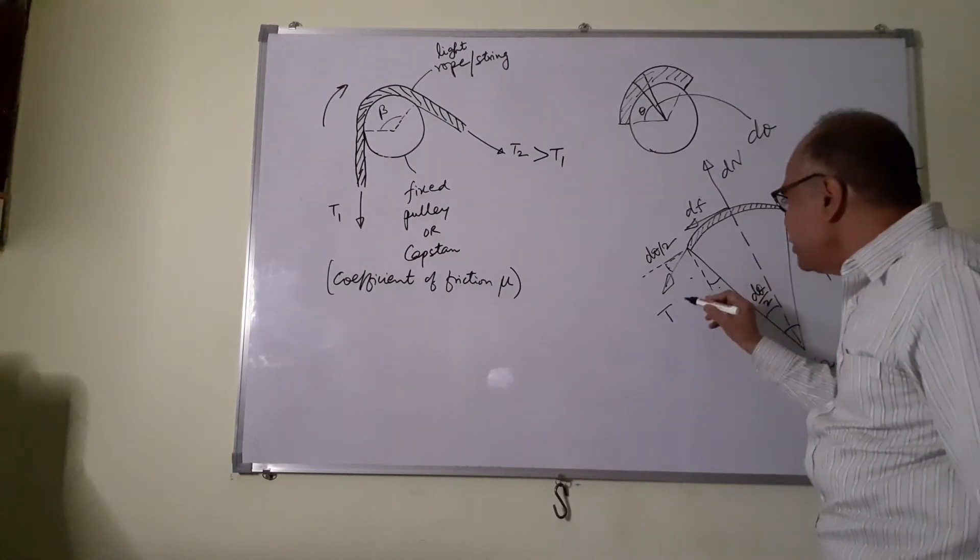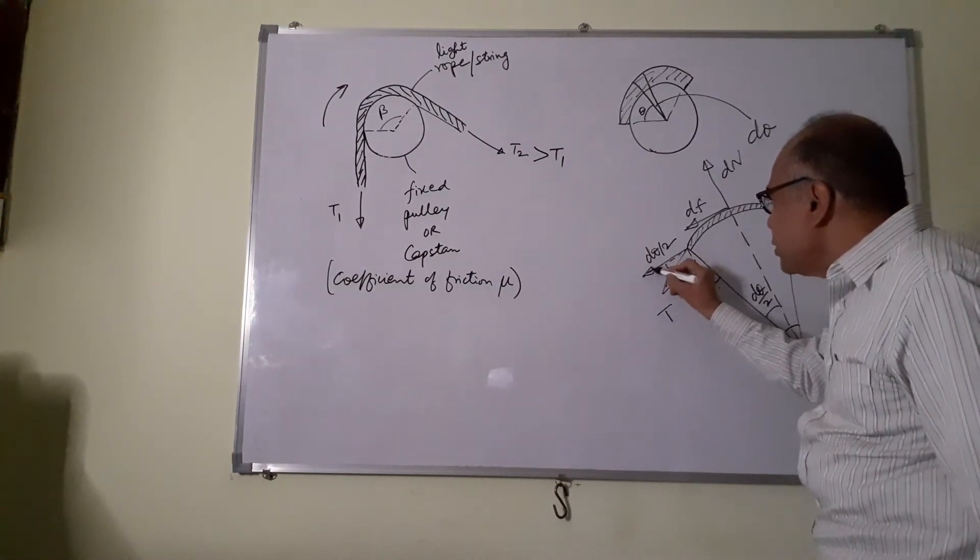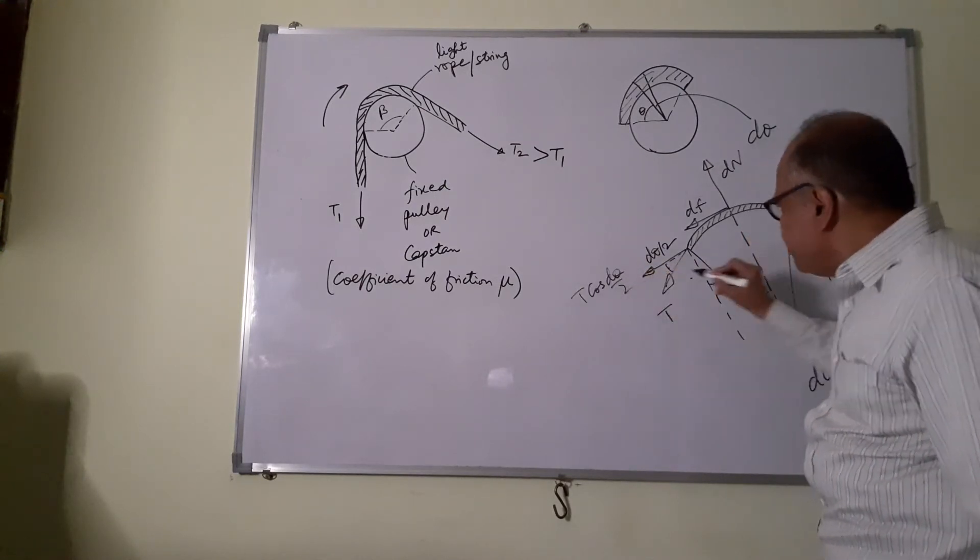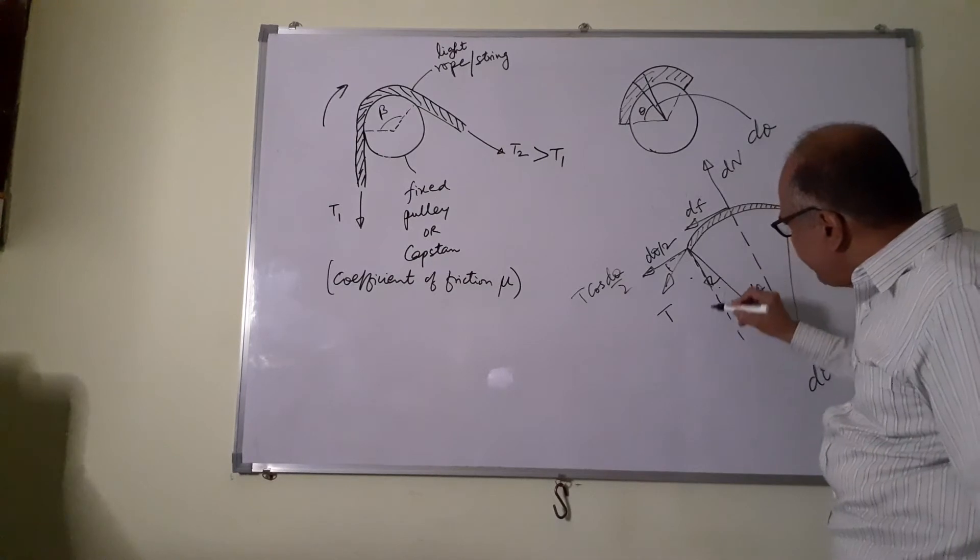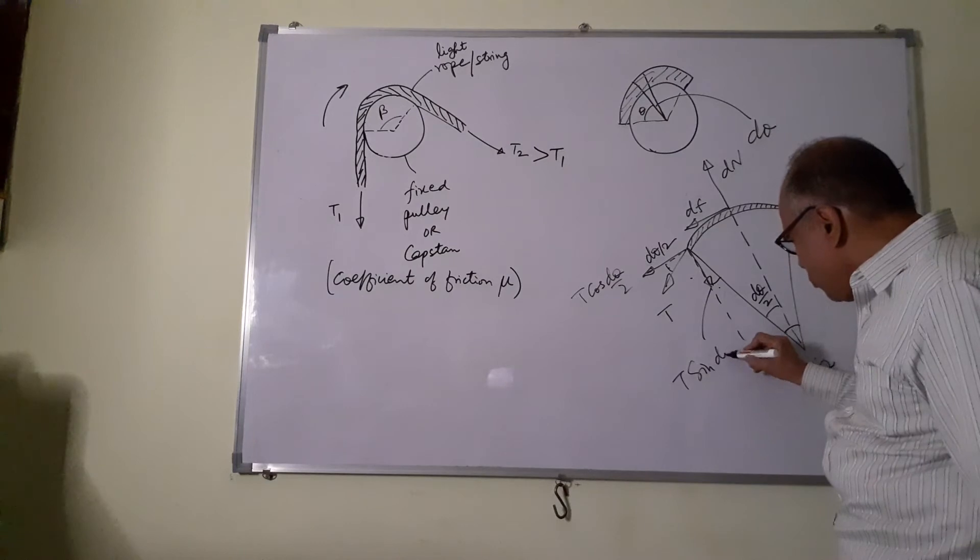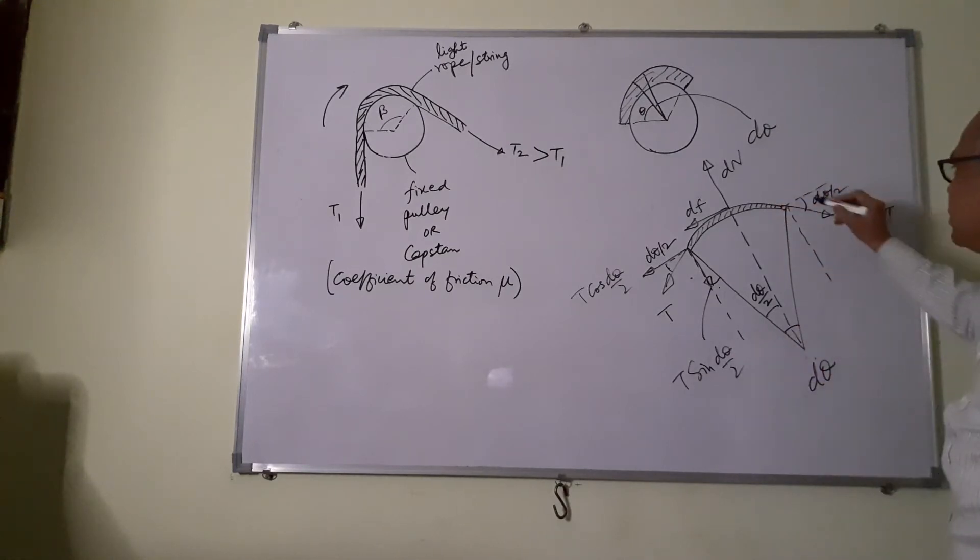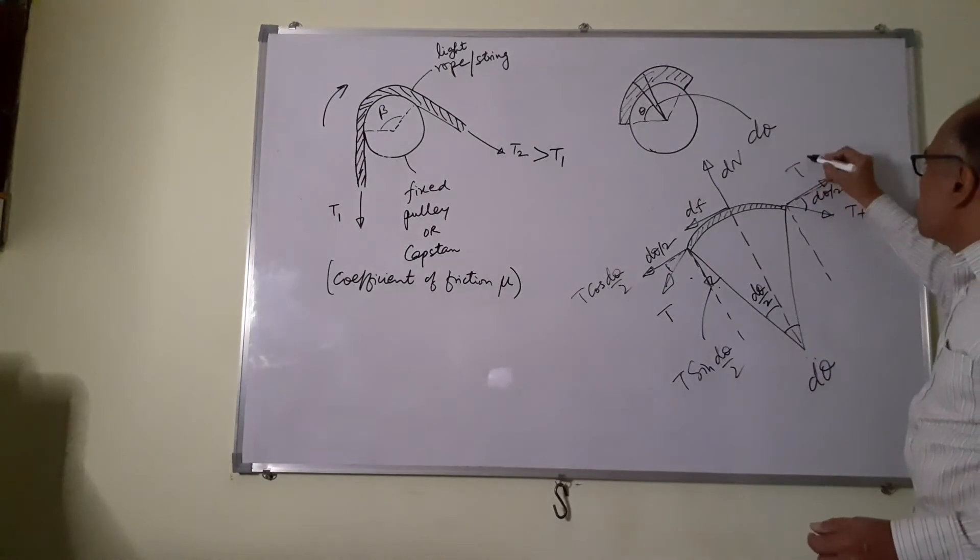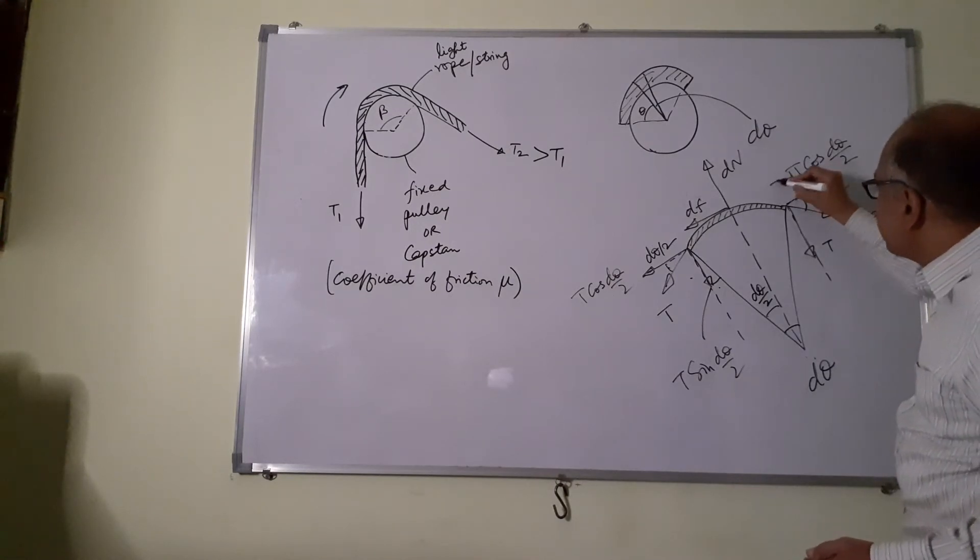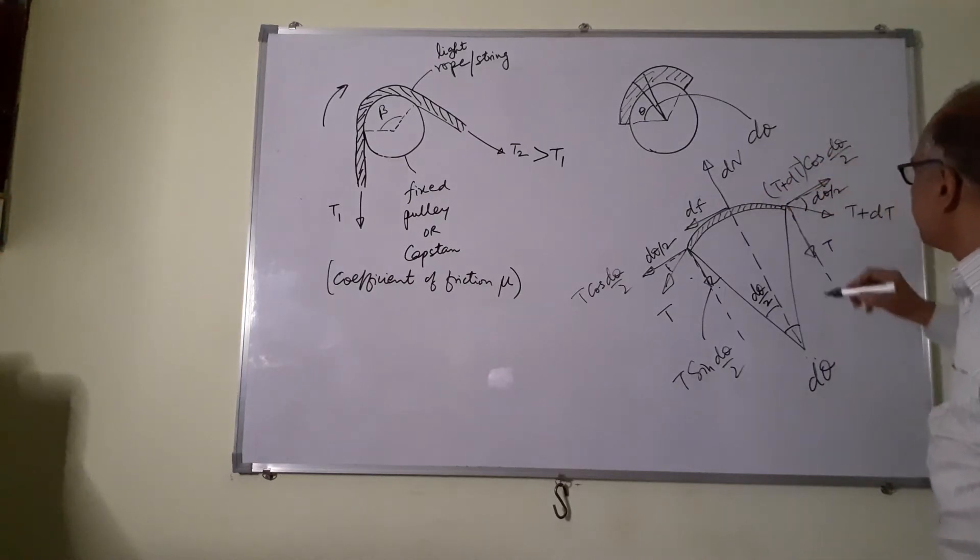Now you can resolve T. T as T cos D theta by 2, and here we will have T sin D theta by 2. Similarly, here we will have T cos D theta by 2, and here we will have T plus D theta by 2.